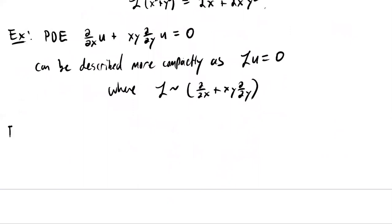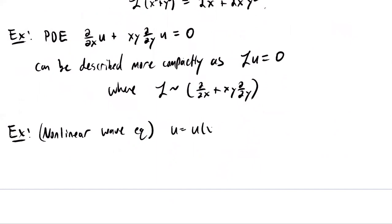Let's look at one more example, something called the nonlinear wave equation. My function U will be a function of x and t, where t is usually thought of as time. I'm going to define my operator not in the abstract way, but by specifying how it acts on the function.